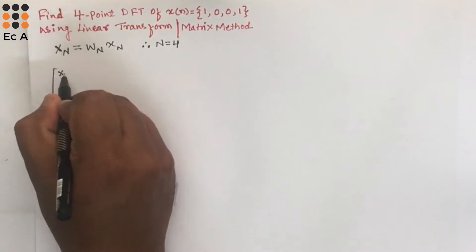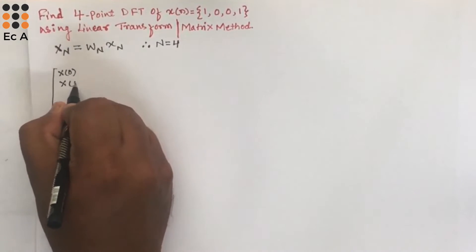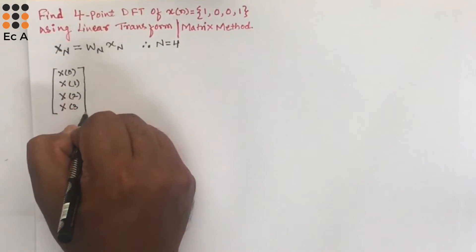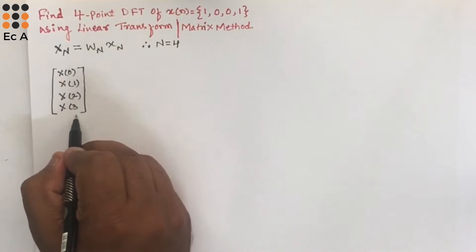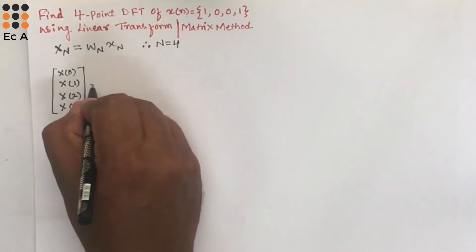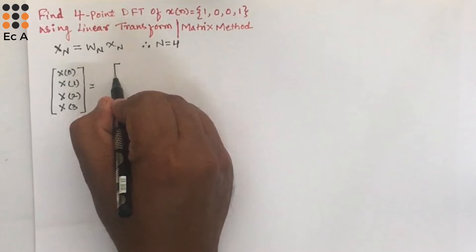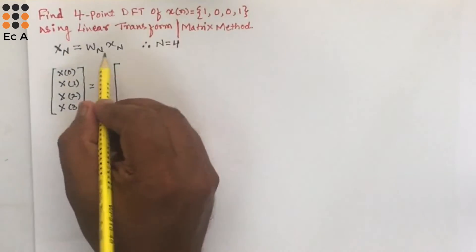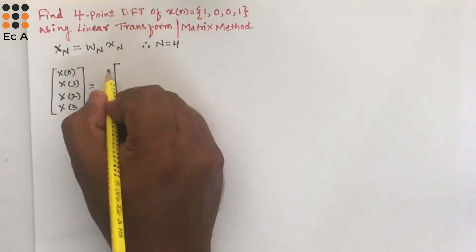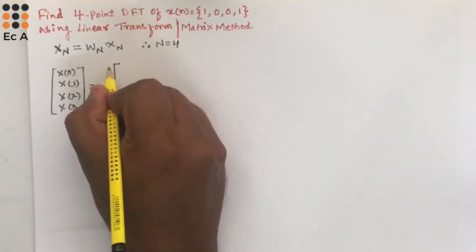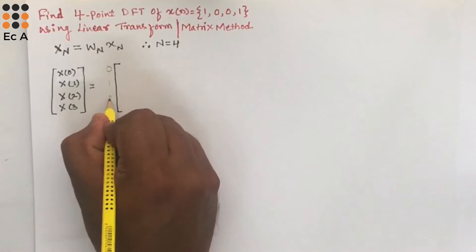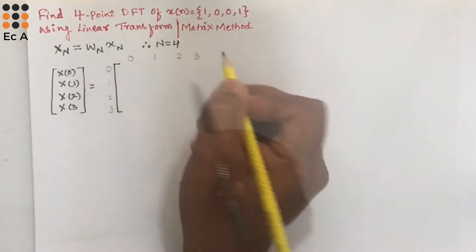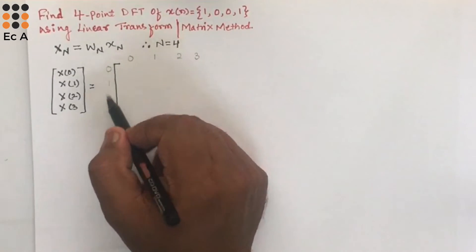Let us write X[0], X[1], X[2], X[3] as the 4×1 output matrix. For W_N we need a 4×4 matrix. One of the easiest methods to find the matrix of W_N is: since N=4, write 0, 1, 2, 3 along the rows and 0, 1, 2, 3 along the columns. This will help us find the power of W_N.